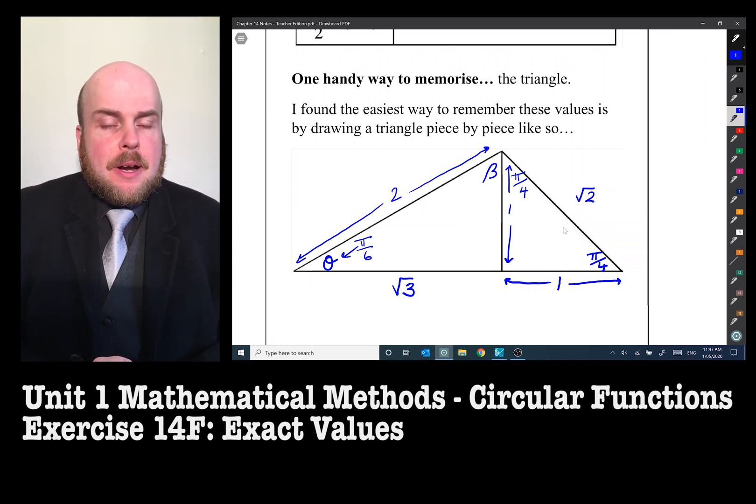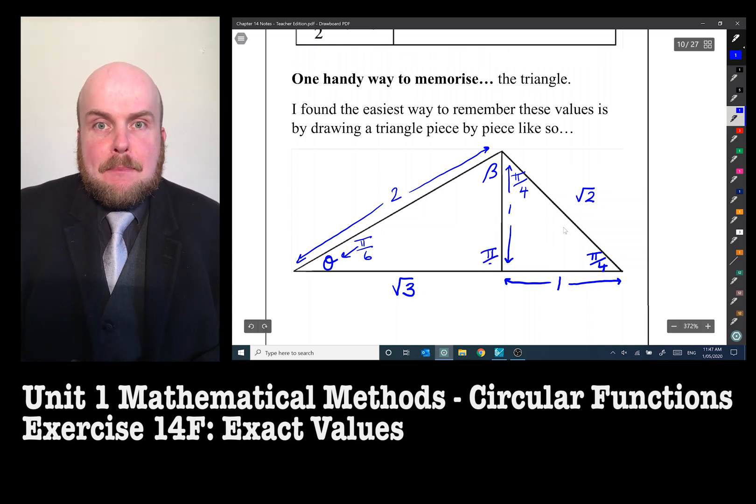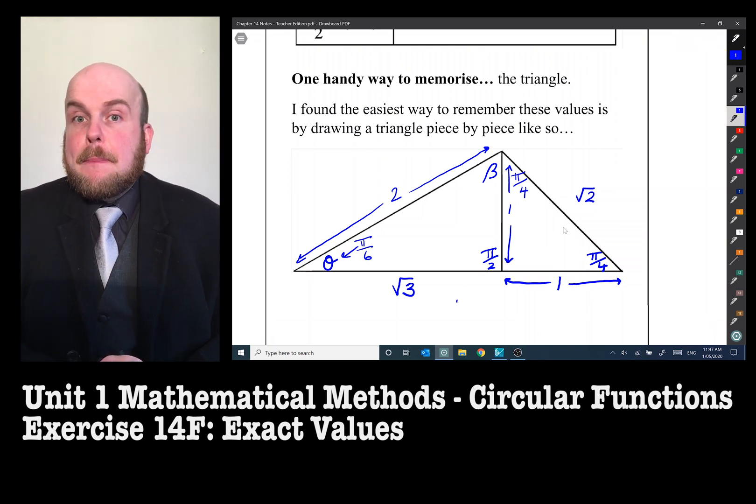So that's pi on six. The angle beta up here would therefore be 90 degrees take away this pi on six. Well, let's keep all of our measurements the same. This will be pi on two. So pi on two take away pi on six.